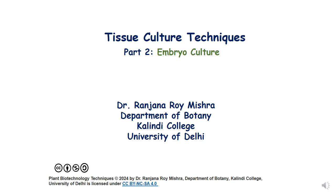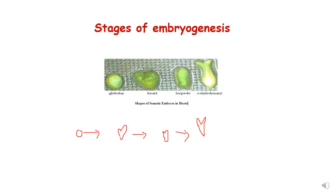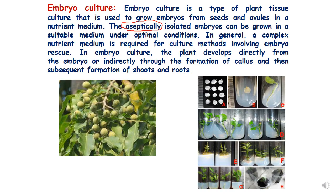In this lecture we will be discussing embryo culture technique under tissue culture techniques. The stages of embryogenesis in plant cell are globular shape, heart shape, torpedo shape, and cotyledonary stage. When the embryo is formed after fertilization, the first stage is globular, then the globular structure turns into heart shaped, then torpedo, and then cotyledonary.